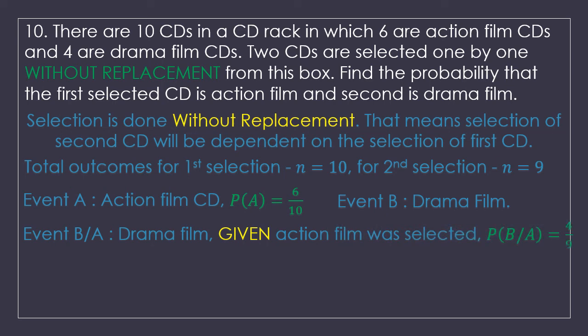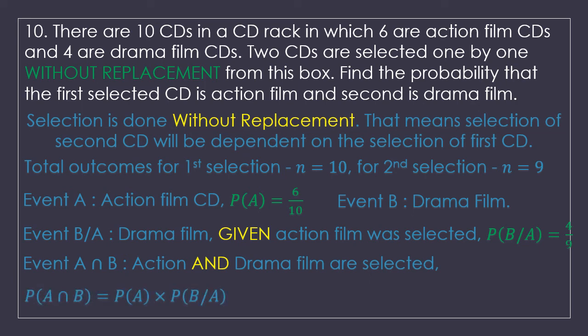The second event is selecting a drama film CD after an action film CD has been selected — this is a conditional event, P(B given A). Total drama CDs are 4 and total remaining CDs are 9, so P(B given A) = 4 upon 9. Using the law of multiplication: P(A intersection B) = P(A) × P(B given A) = 6 upon 10 × 4 upon 9 = 24 upon 90, which simplifies to 4 upon 15.